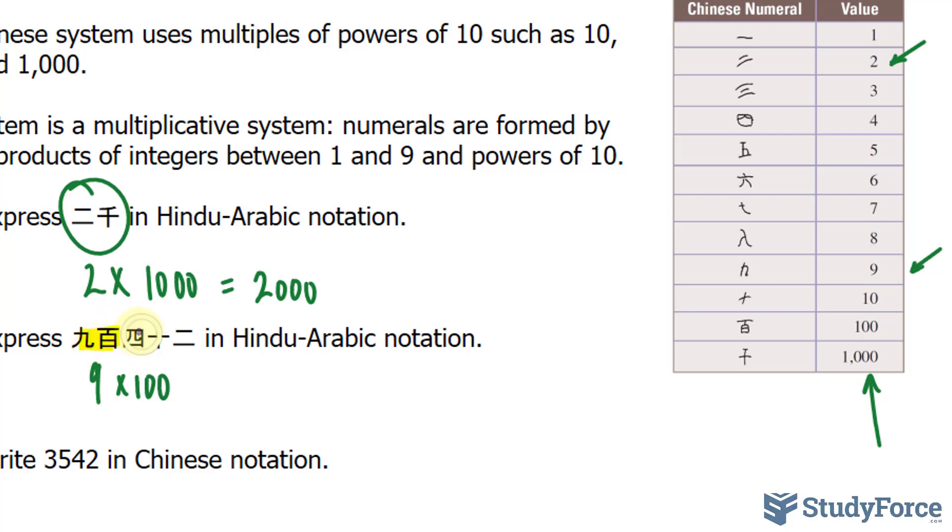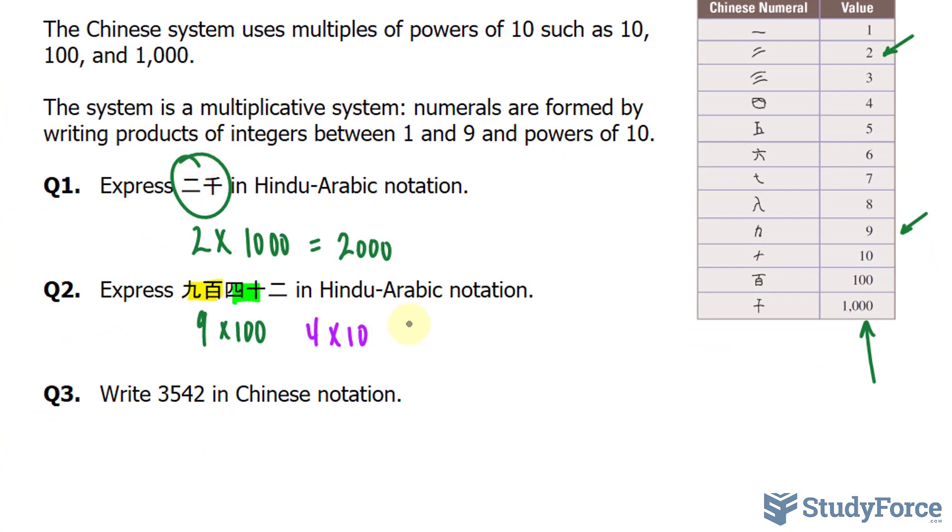Then we have the following symbol, which is 4, and then next to it, to its right, is 10, shown right here. 4 times 10. That takes care of these two. And lastly, we have the number 2, as we used in question number 1. So, putting this all together, we have 942.